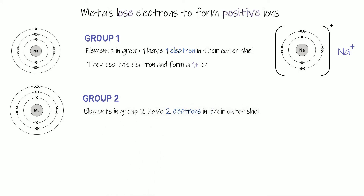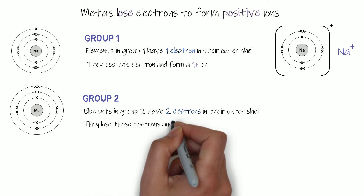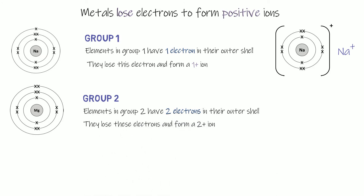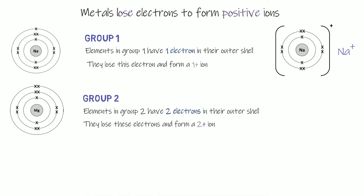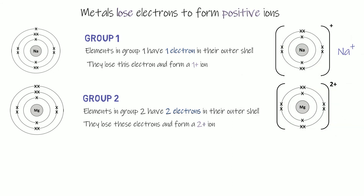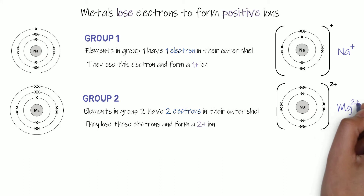Group two elements have two electrons in their outer shell — you can see magnesium there on the left. Elements in group two lose those two electrons. Because they've lost two negative electrons, they become two more positive — they form 2+ ions. So Mg atoms become Mg²⁺ ions.